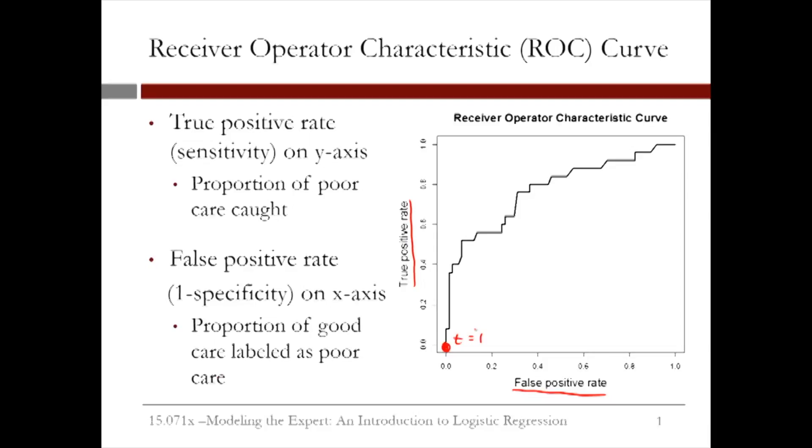If you have a threshold of 1, you will not catch any poor care cases, or have a sensitivity of 0. But you will correctly label all of the good care cases, meaning you have a false positive rate of 0.